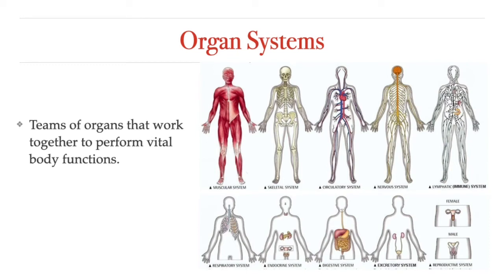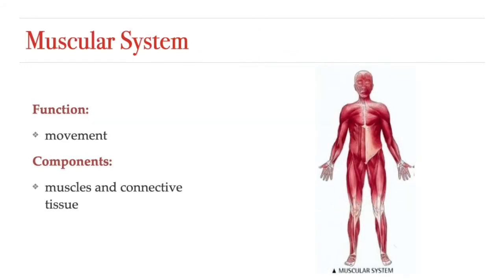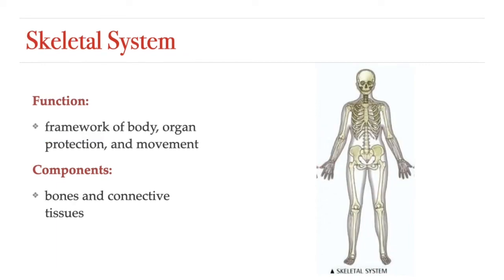We're going to briefly explore the 10 major systems that are responsible for the body's function. Keep in mind that this is just a quick introduction — some of these we will explore in a lot more detail in other lessons. Let's start with the muscular system, which is made up of muscle tissue but also connective tissue like tendons and ligaments, and its role is to allow for movement of the different body parts. This movement cannot happen without a framework onto which to anchor those muscles.